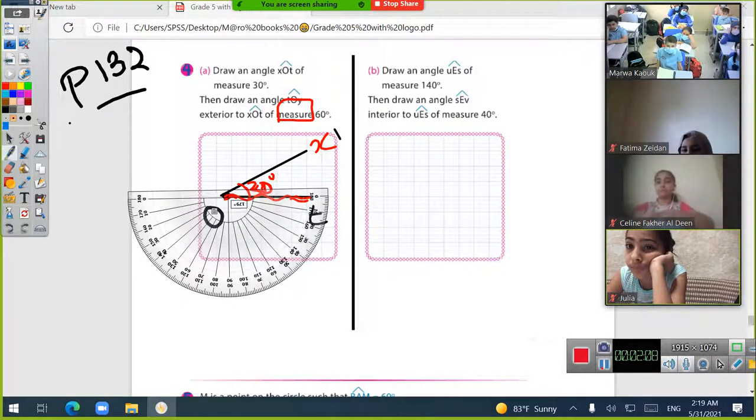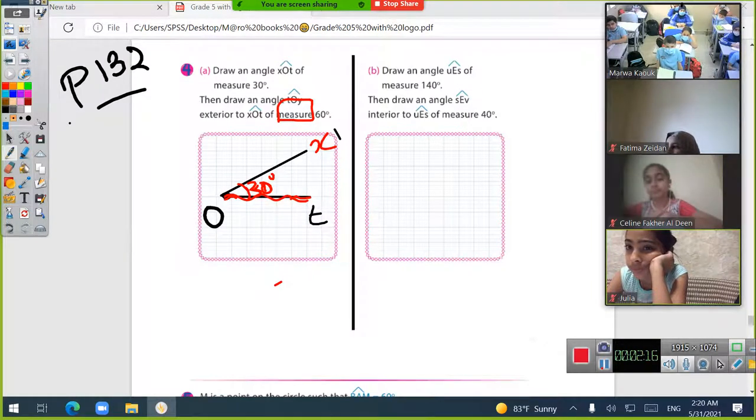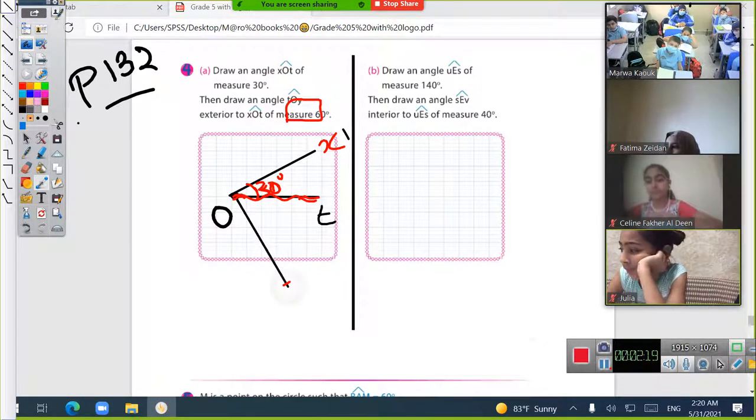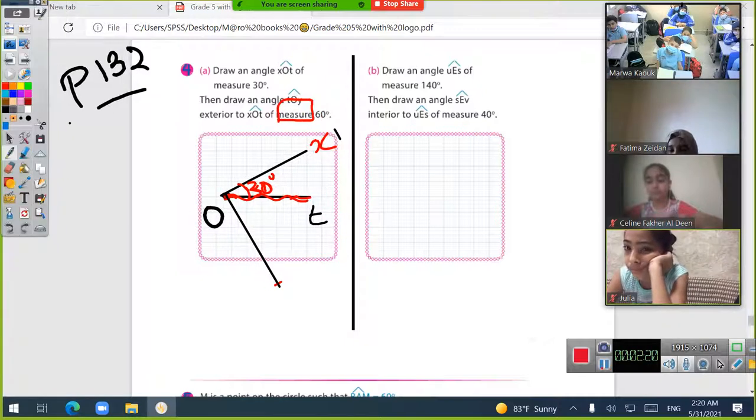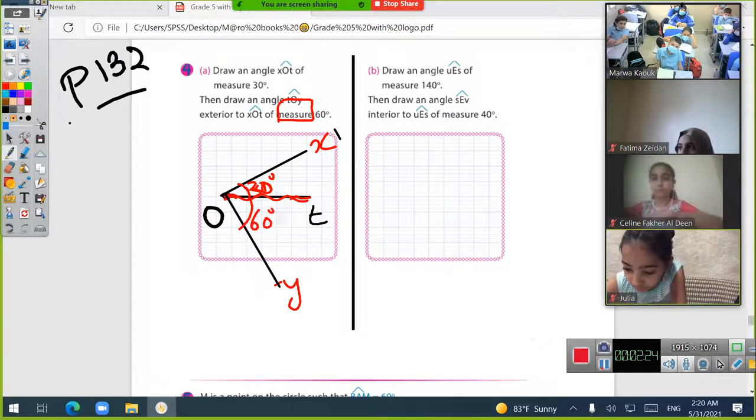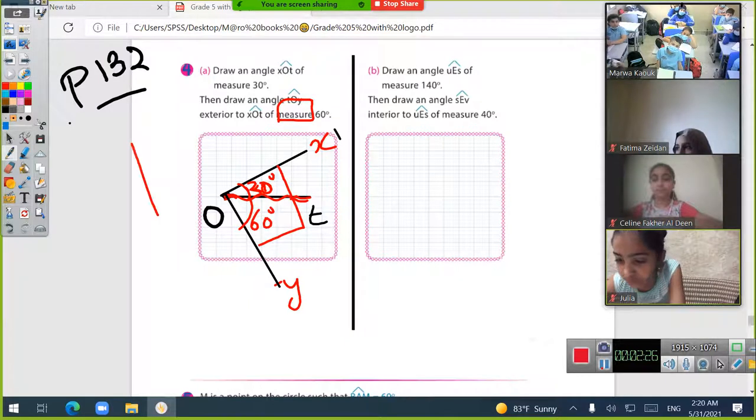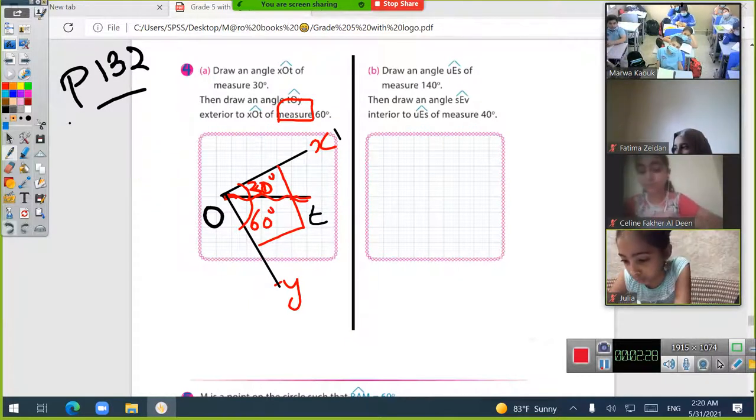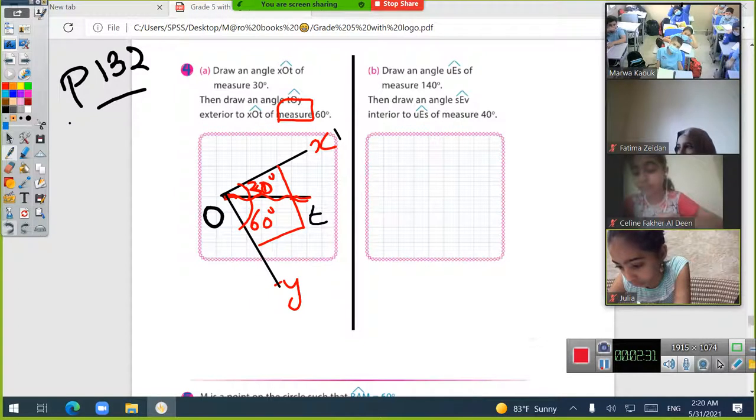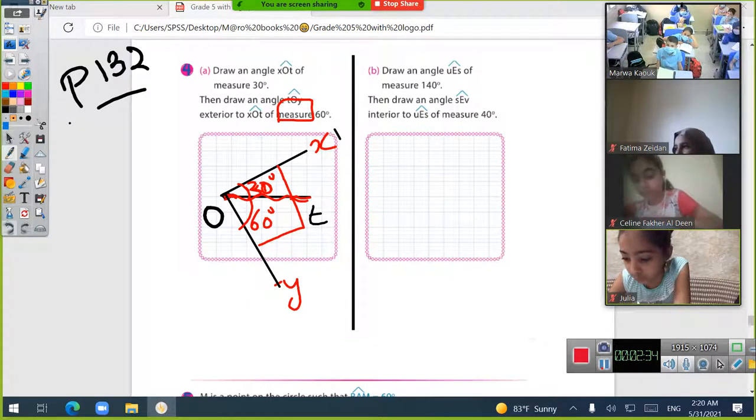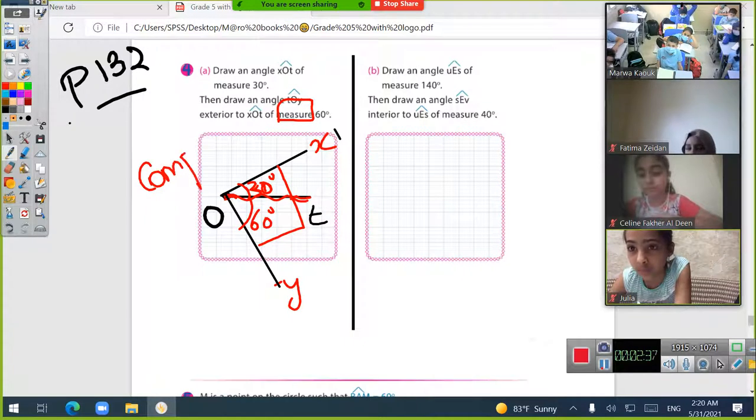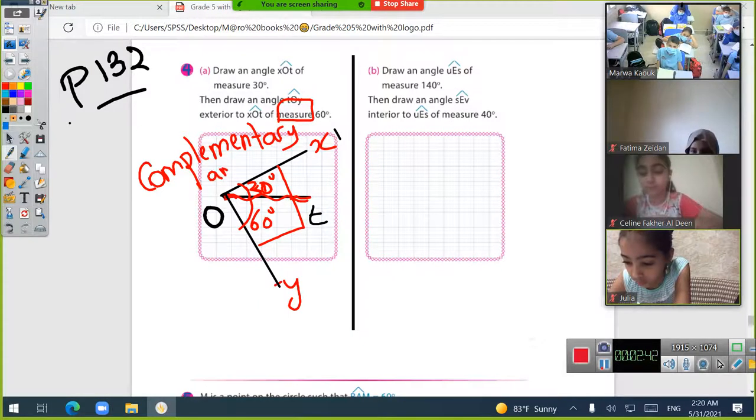If you add 60 plus 30, it equals 90 degrees. That means an L shape. These are two angles whose sum is 90 degrees. They form an L shape. Two angles whose sum is 90 degrees are called complementary angles.